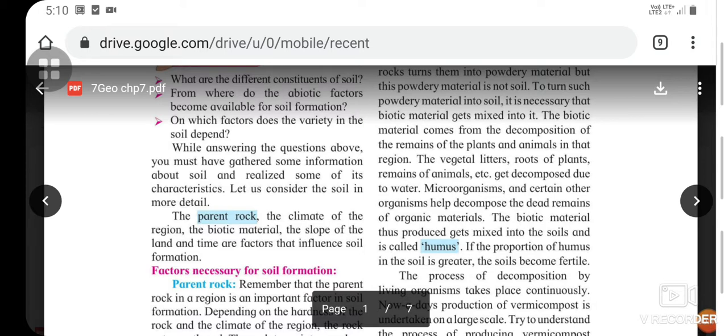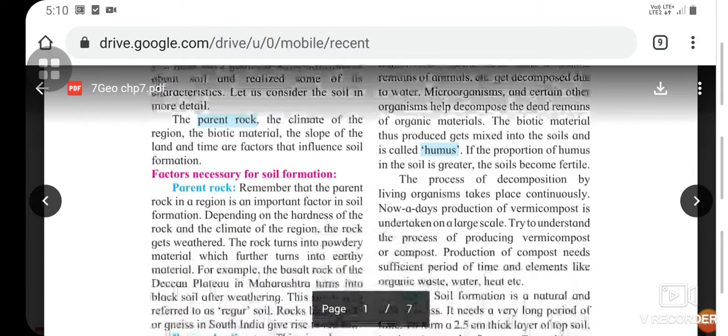While answering these questions, you must have gathered some information about soil and realized some of its characteristics. Let us consider the soil in more detail. The parent rock, climate of the region, biotic material, slope of the land, and time are factors that influence soil formation.